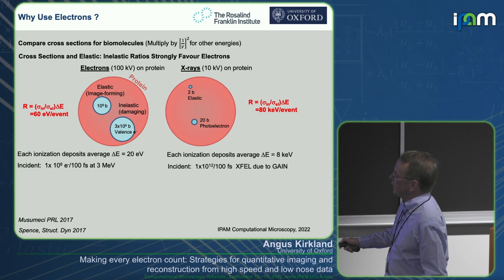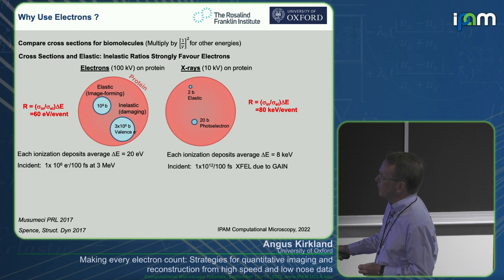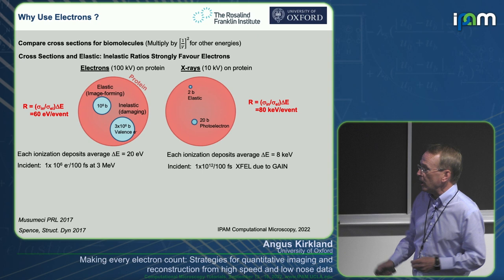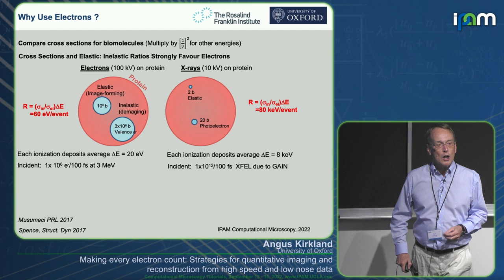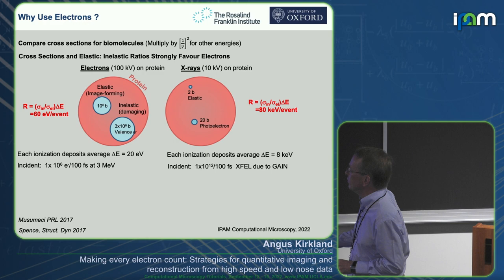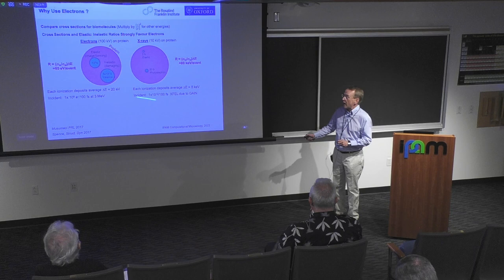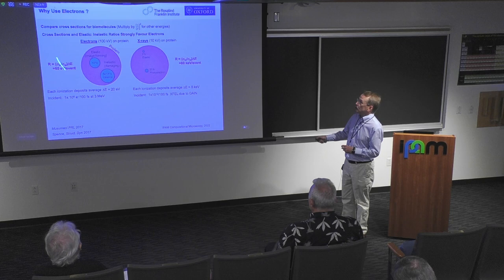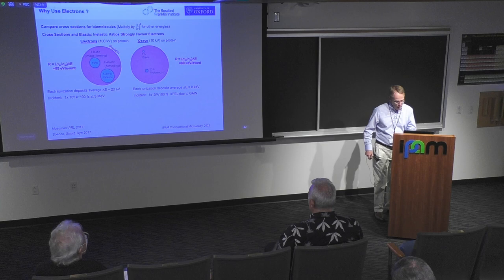So we've got less damage per inelastic collision and bigger cross-sections — that's a good justification for using electrons. However, the best electron flux is about 1 by 10 to the 6 electrons in 100 femtoseconds, from a 3-megavolt instrument in Japan. For X-rays at the XFELs, you can get 10 to the 12 photons in a similar 100-femtosecond window — about six orders of magnitude higher flux. So for experiments needing high flux in very short time frames, X-rays and XFELs are the weapon of choice.